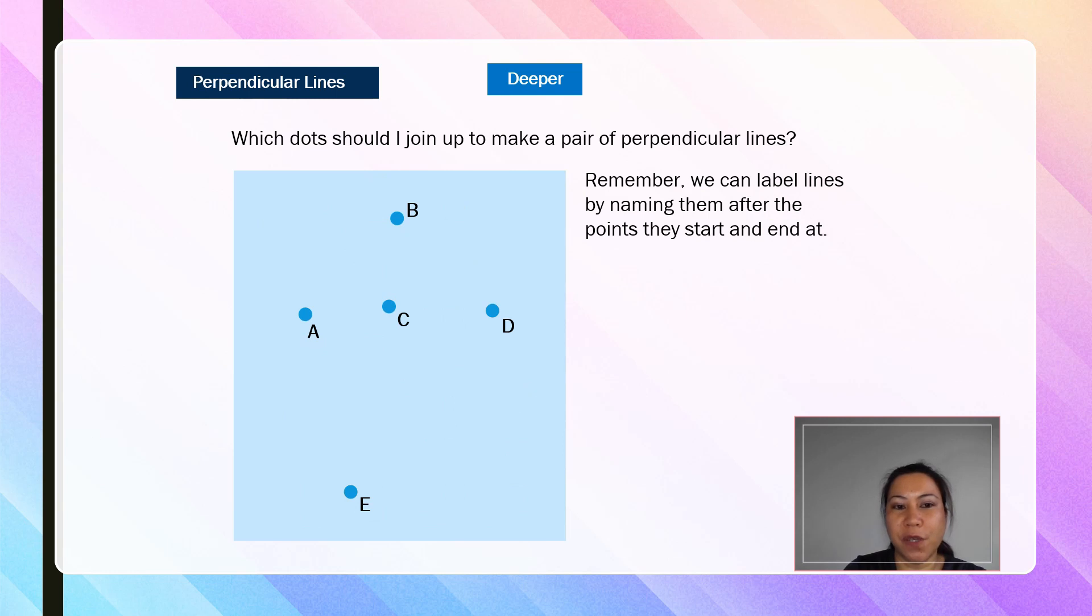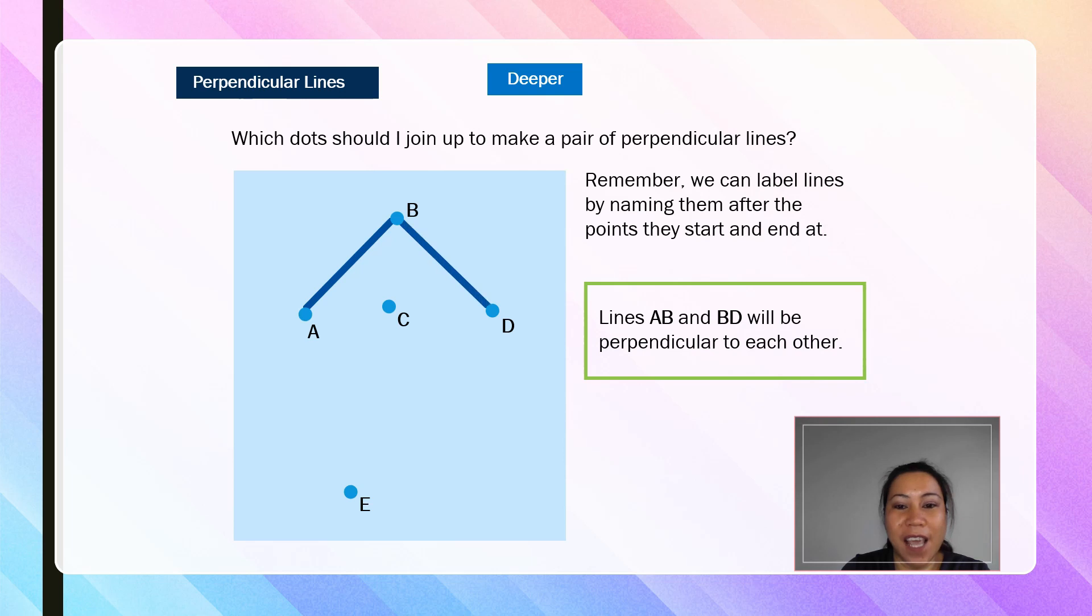I have a challenge for you. Which dots should I join up to make a pair of perpendicular lines? Remember, we can label lines by naming them after the points they start and end at. So, which points? If you answer lines AB and line BD, you are correct. Lines AB and BD will be perpendicular to each other.